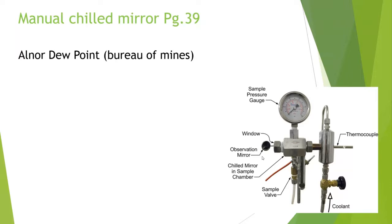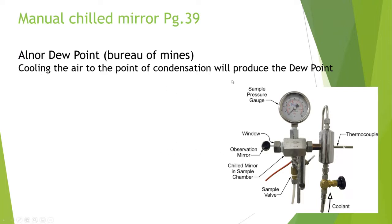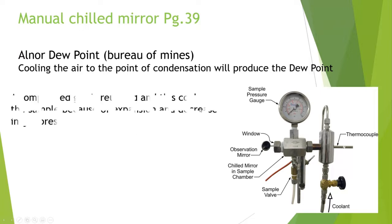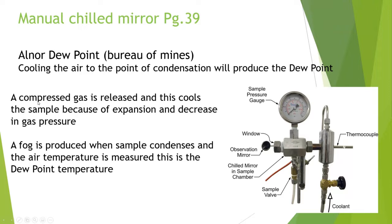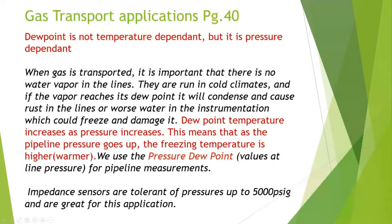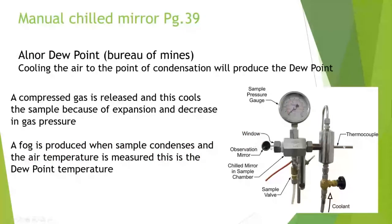The Alnor dew point or Bureau of Mines method is a manual version of the chilled mirror approach. Compressed gas is released, which cools the sample through expansion and a decrease in gas pressure — similar to an aerosol can getting cold when you press the nozzle. When the sample reaches its dew point, fog is produced. The temperature is measured on a thermometer or thermocouple at that moment to determine the dew point temperature.